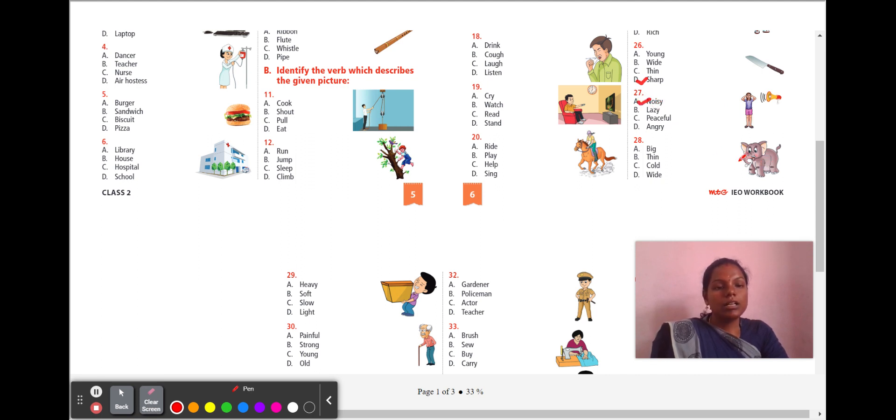Next, 28th question. There is an elephant. Elephant is the biggest land animal. So, which word suits the elephant? A, big. B, thin. Thin in the sense slim. C, cold. D, white. So, how does the elephant look? It is big. A, big is your right answer. Next, 29th question. A boy is having a big box in his hand. So, look at his face. Is he happy to lift it? Let's check. A, heavy. B, soft. C, slow. D, light. He seems it is a very heavy box. So, the answer is A, heavy.